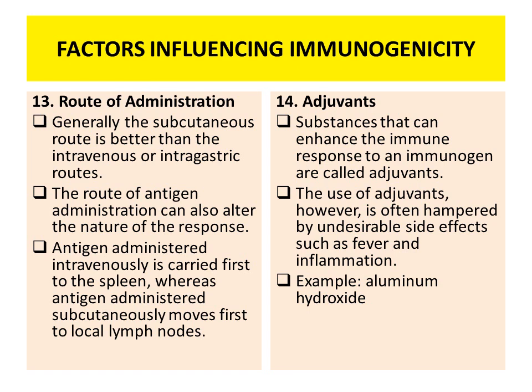Next is adjuvant. Substances that can enhance the immune response to an immunogen are known as adjuvants. The use of adjuvants, however, is often hampered by undesirable side effects such as fever and inflammation — for example, aluminium hydroxide. Adjuvants increase the immune response to the antigen, and even the amount of antigen required for the vaccine is also less, thereby cutting the cost of the vaccine. So adjuvants are also very important.